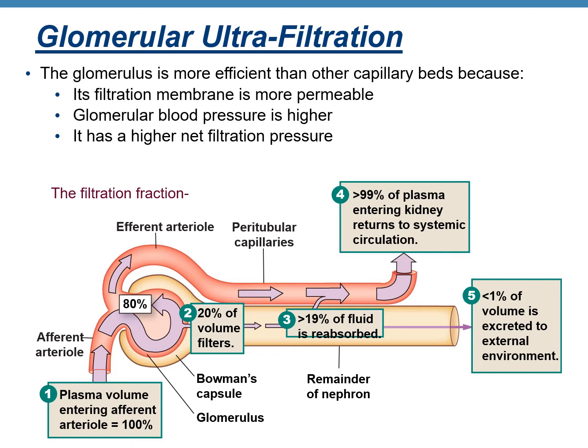The rest 80% stays in the blood vessels and drains through the efferent arterioles back into the circulatory system. Out of the 20% that gets filtered out, 19% of the fluid would be reabsorbed back into the blood through the peritubular capillaries. So less than 1% is excreted to the external environment, meaning more than 99% of the plasma that enters returns to systemic blood circulation.